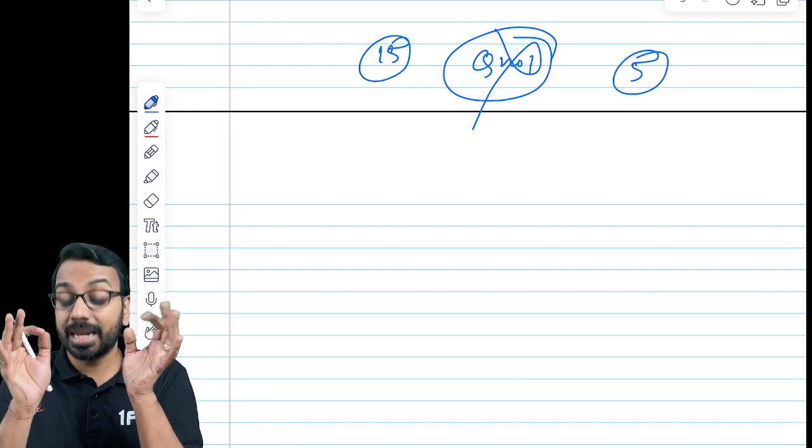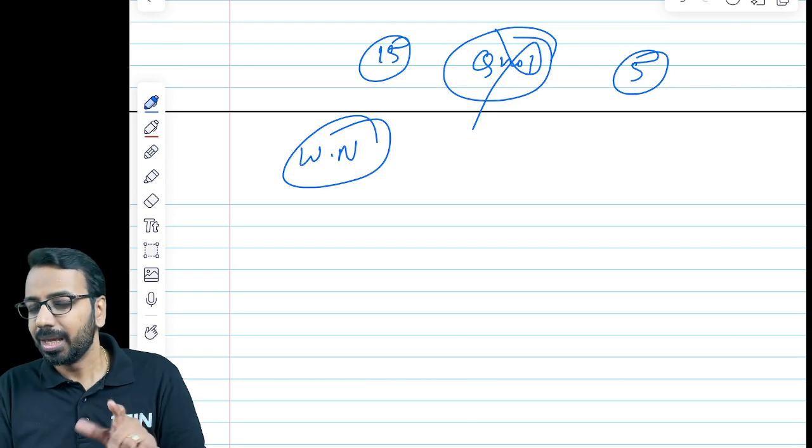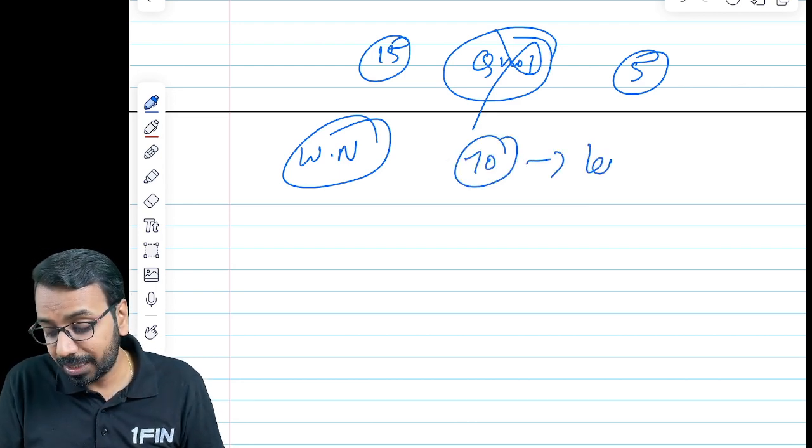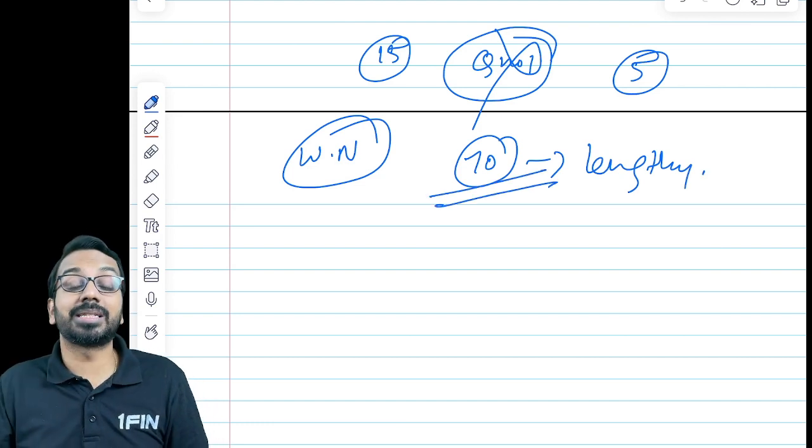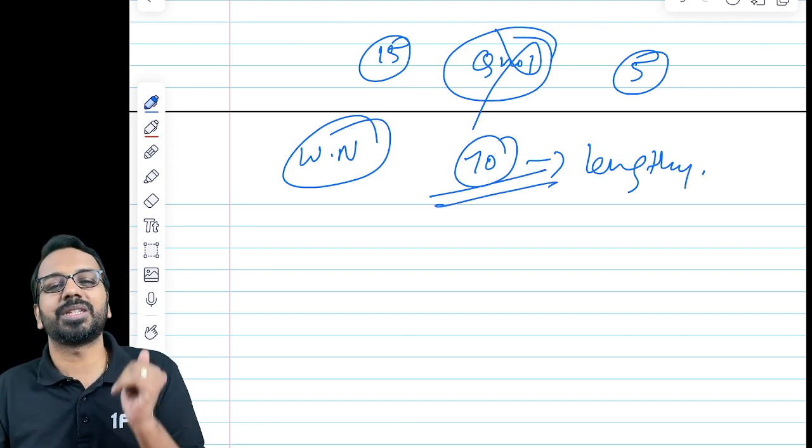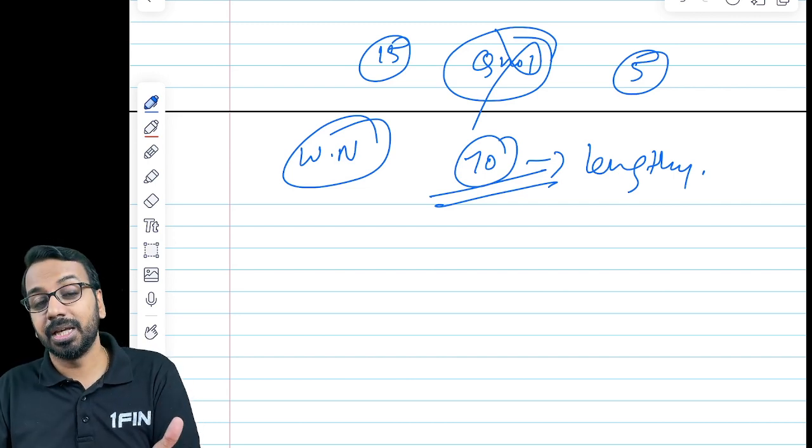And ensure working notes are compulsorily given wherever required. And one thing it has happened that the 70 marks paper has become lengthy, so to attempt 70 marks may be sometimes difficult, but try to attempt as much as you can, especially don't leave out the question on final accounts and amalgamation.